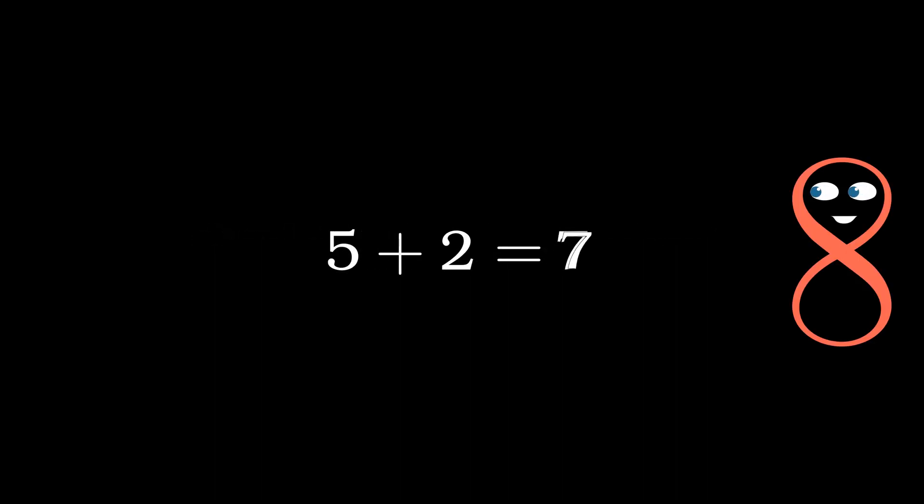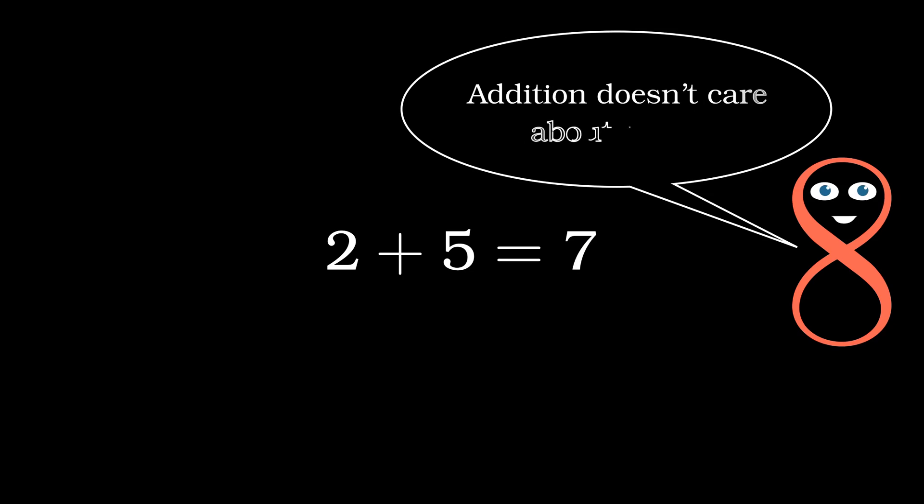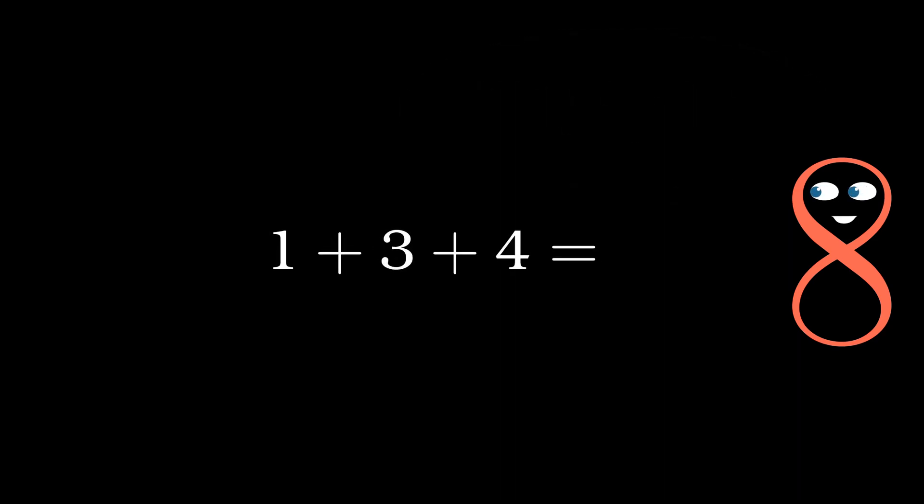5 plus 2 equals 7, but also 2 plus 5 leads to the same result because the order of the addends has no effect on the final result. Even if we need to add more than two numbers, we can change the order of the addends as many times as we want, but the sum remains unchanged.